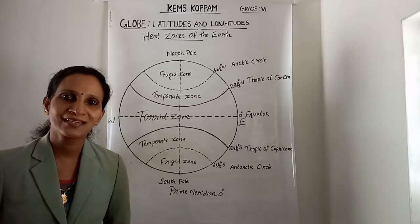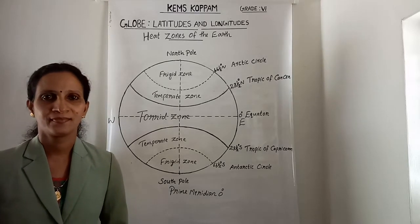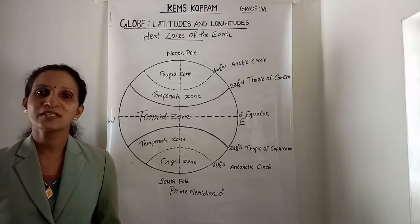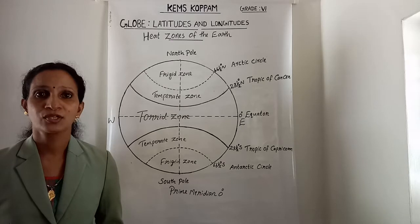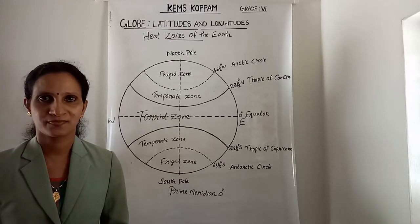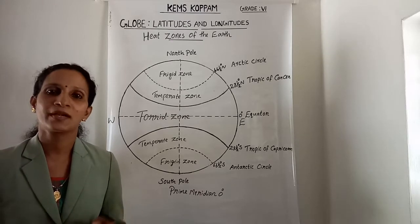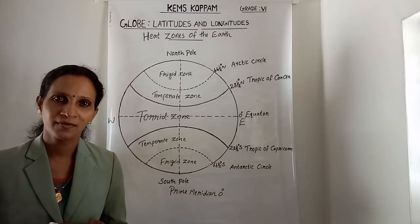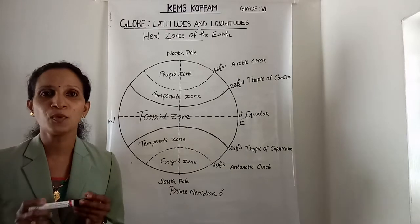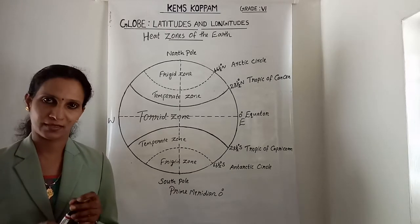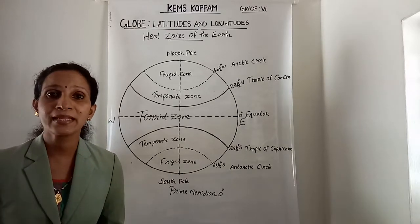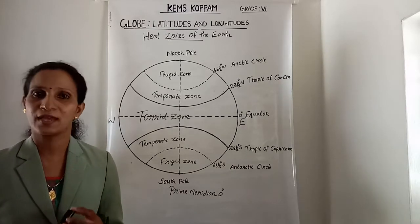Good morning, my dear children. In the last class we studied about globe and latitudes. Globe is a true model of the earth — a miniature form of the earth.